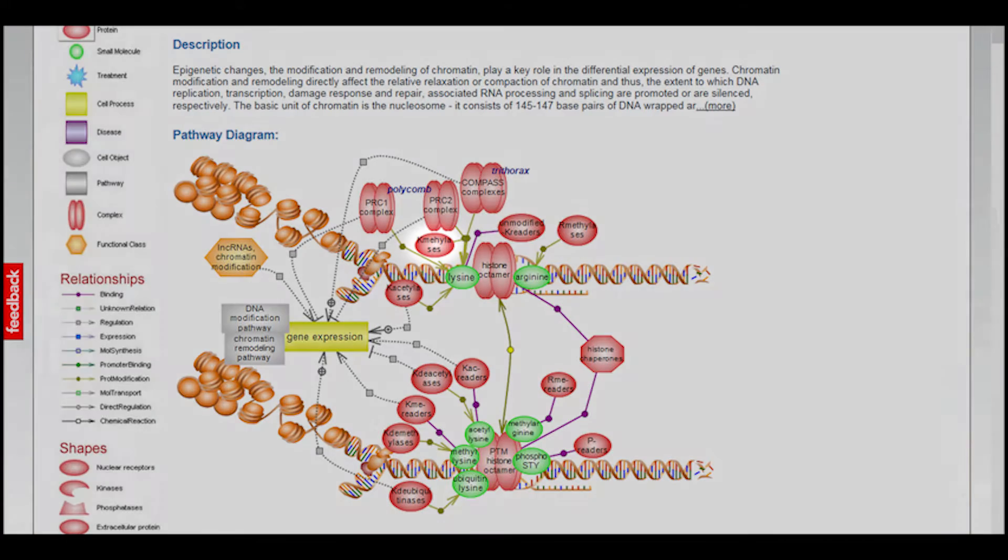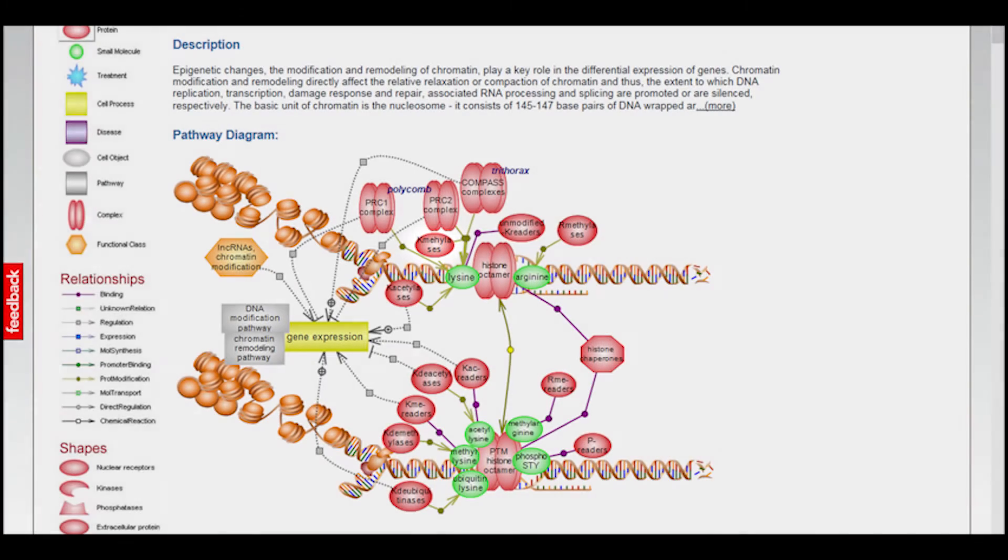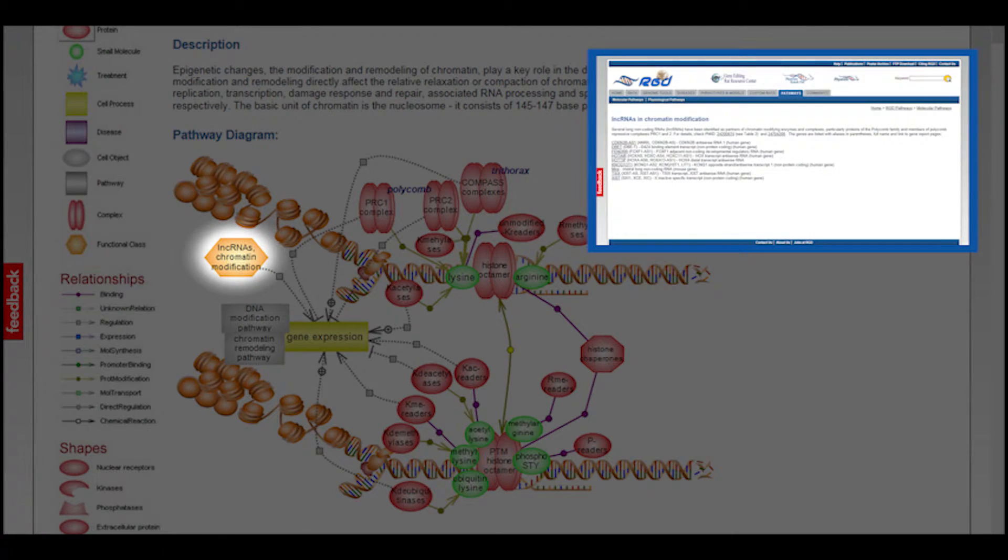Where the icon represents any of a group of proteins, it will open a page with a list of possible participants, which in turn link to the report page for each. In the same way, icons are functional classes linked to an RGD page showing a list of members of that class.